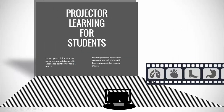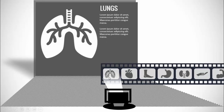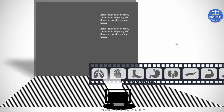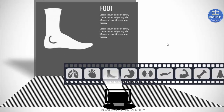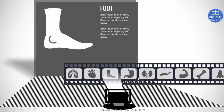This is the first slide where you can see a projector on the floor and a big projector screen. You can add your first text here — for example, 'Projector Learning for Students.' I have put a film reel with images of body parts. When you click, it moves on, the light falls onto the first object, a bigger image appears on the screen, and you can add detailed text, heading, and title. On the next click it goes to the next one, and so on.